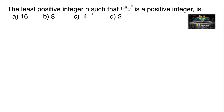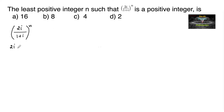Find the least positive integer n such that (2i / (1+i))^n is a positive integer. Let us consider 2i / (1+i), which equals 2i multiplied by 1/(1+i).